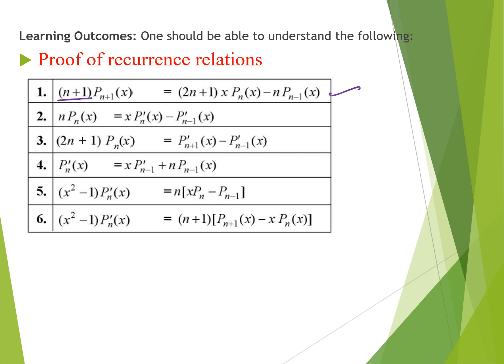The first recurrence relation is: (n+1) P_{n+1}(x) = (2n+1) x P_n(x) minus n P_{n-1}(x). Here P_n(x) is the Legendre function. The second recurrence relation is: n P_n(x) = x P_n'(x) minus P_{n-1}'(x).